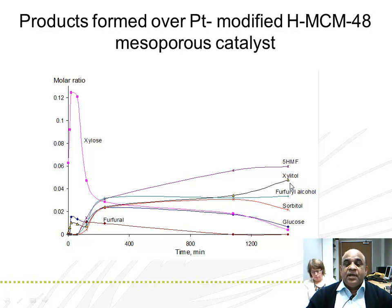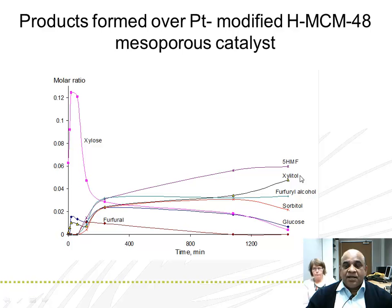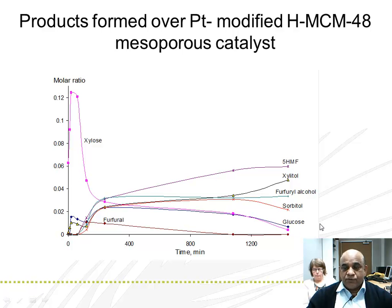here: that in the presence of platinum over MCM-48, we could directly convert this to xylitol and sorbitol, besides other products which are of course glucose, furfural, and xylose.